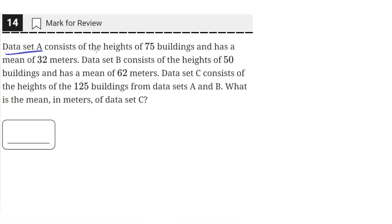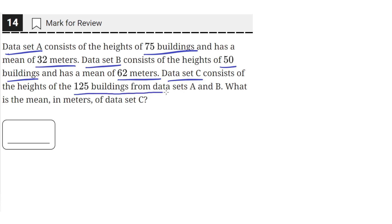Data set A consists of the heights of 75 buildings and has a mean of 32 meters. Data set B consists of the heights of 50 buildings and has a mean of 62 meters. Data set C consists of the heights of the 125 buildings from data sets A and B. What is the mean in meters of data set C?